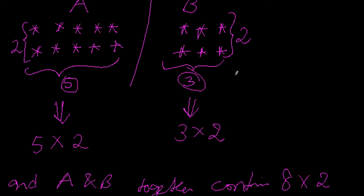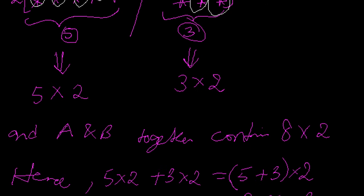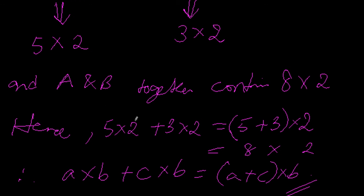If you want to see this, this is one, two, three, four, five, six, seven, eight. So eight columns into two rows, that means 8×2 stars are there altogether.